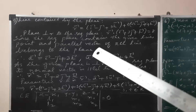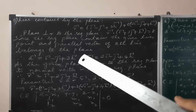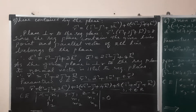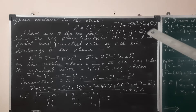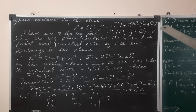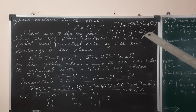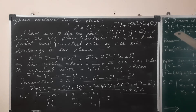We are now seeing the fifth problem of 6.7. Find the parametric form of vector equation and Cartesian equations of the plane containing the line R equals i minus j plus 3k vector plus t times 2i minus j plus 4k vector, and perpendicular to the plane R dot (i plus 2j plus k vector) equals 8.